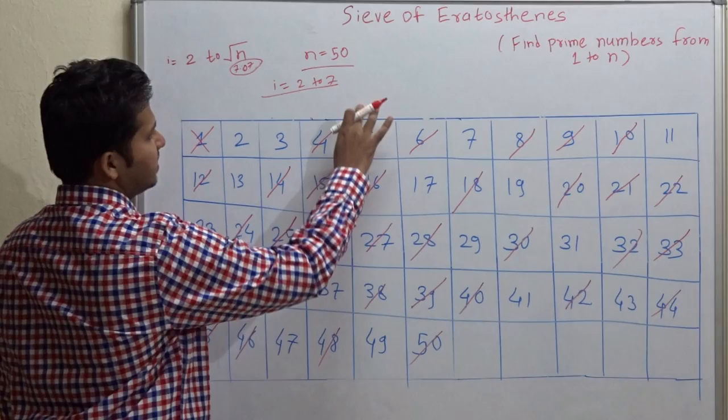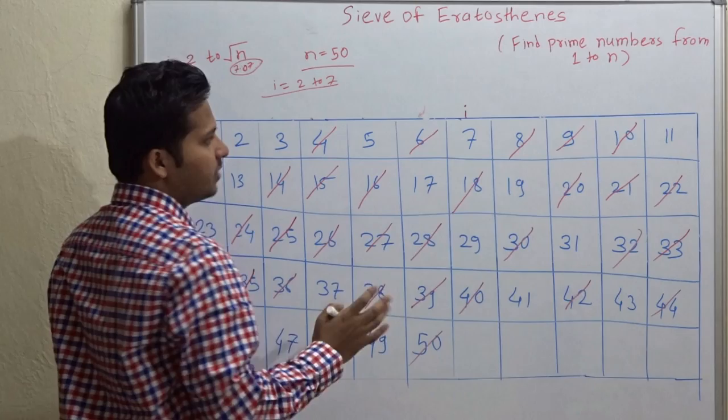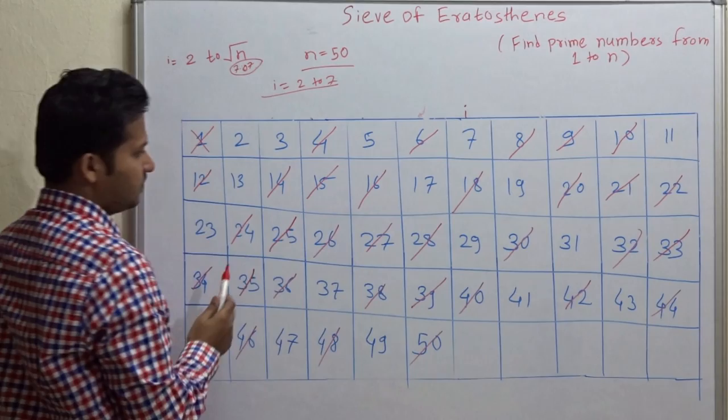Now, let us increment i. This is already cancelled. This is already cancelled. So increment i. 7. 7 is not cancelled means it is a prime number. Let us cancel the multiples of 7.